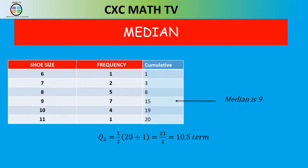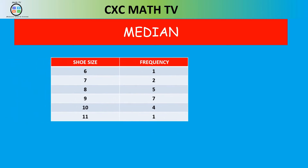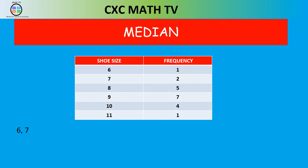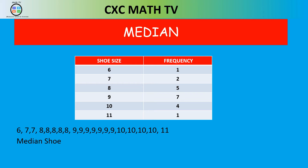To confirm: if you write out all 20 shoe sizes in order — 6, 7, 7, five 8s, seven 9s, four 10s, one 11 — the middle term is indeed 9. So using the cumulative frequency approach gives the same result. The median shoe size is 9.